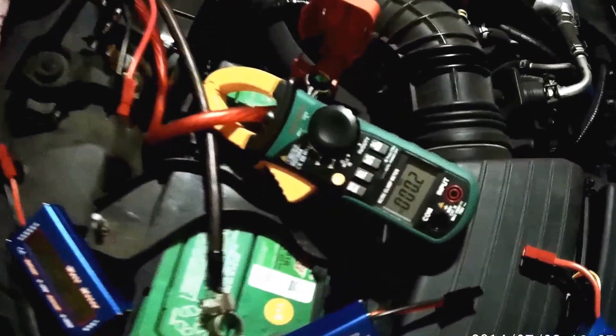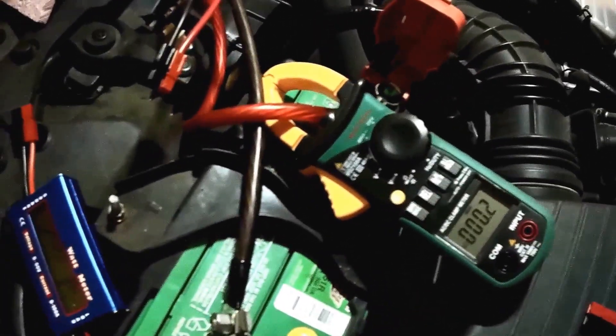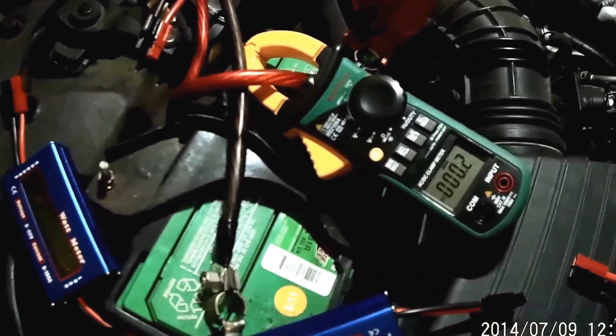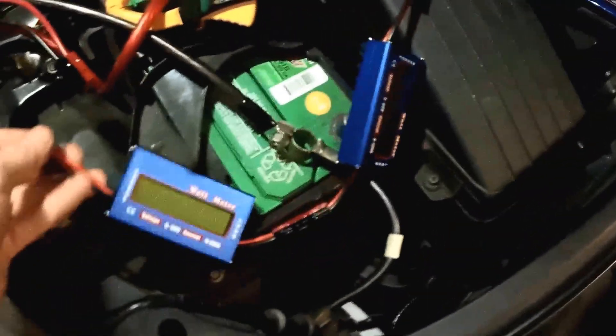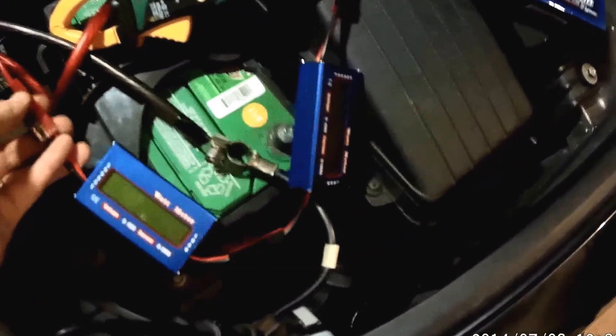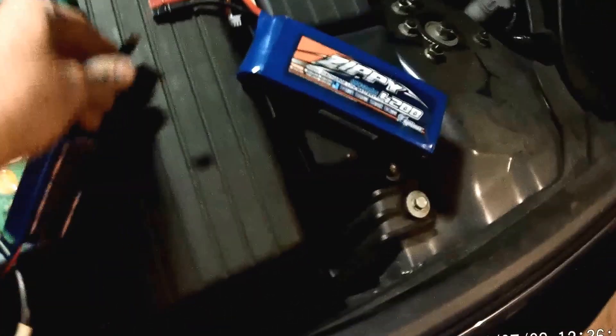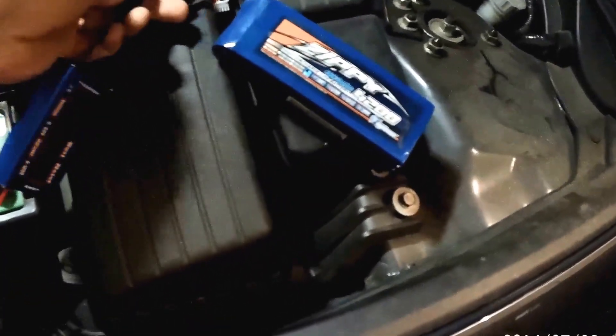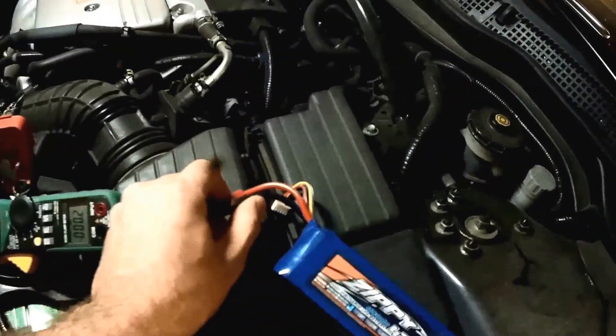I've already got my clamp meter set up, but this is going to measure the peak amps drawn from the starter motor when I start the car. Let me go ahead and hook these two meters up here, and these will measure the amperage to and from the battery. Make sure that those don't go outside of the limits that we want to set here.